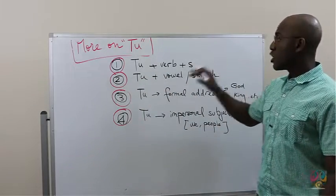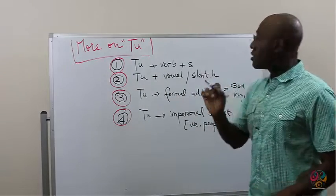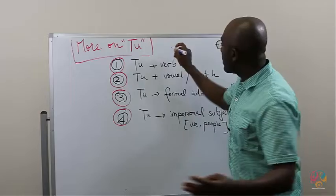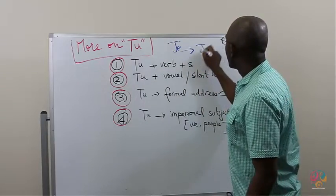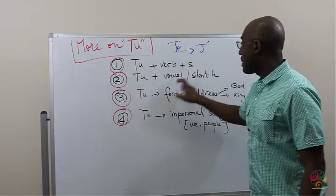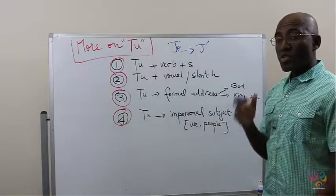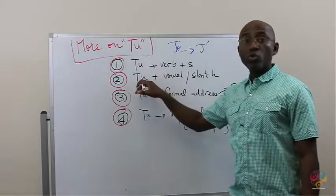I'm saying this because many students know this already, that JE turns into J' when it precedes a vowel or a silence H. So, they wrongly assume that this is the case for TU as well.